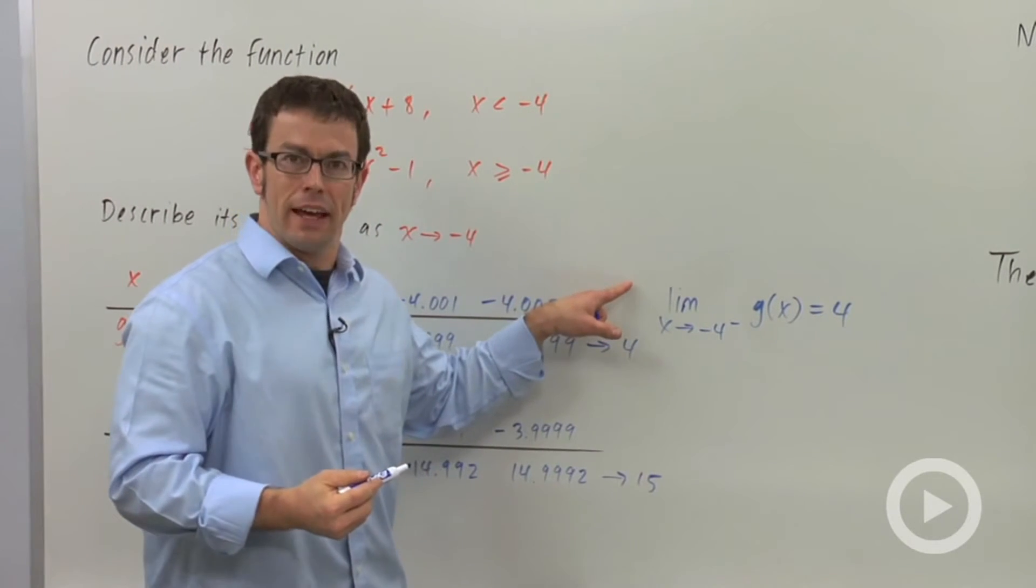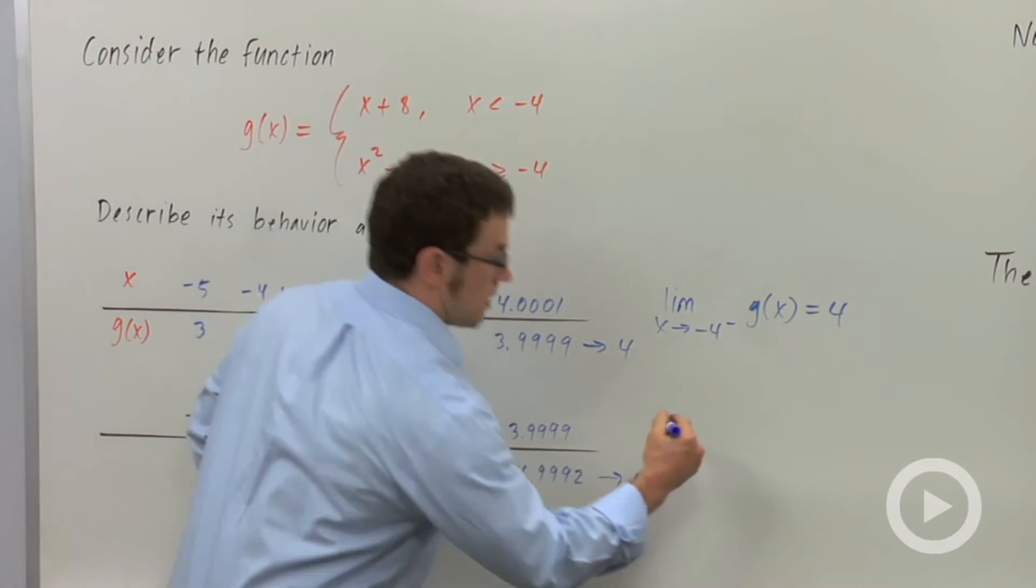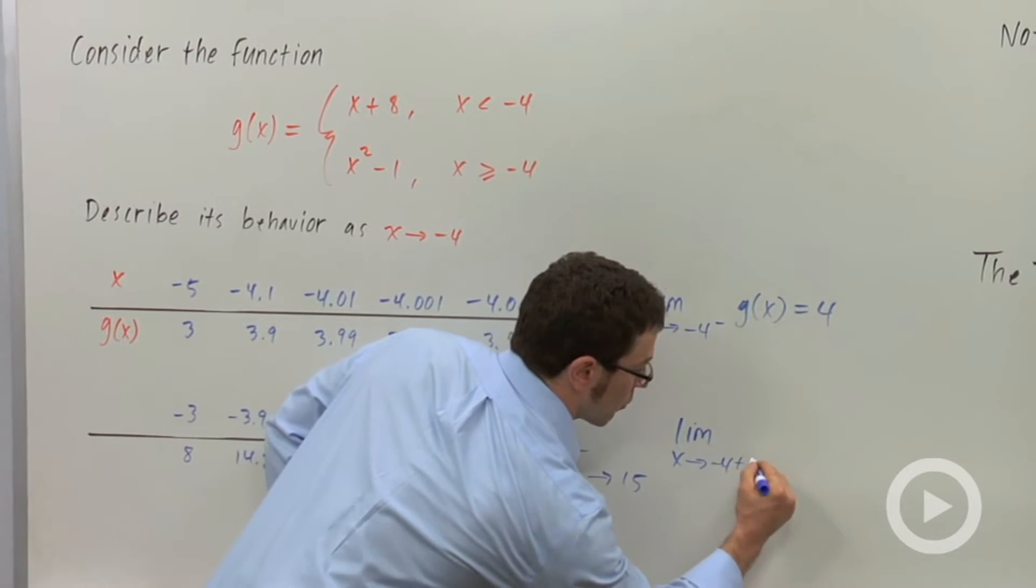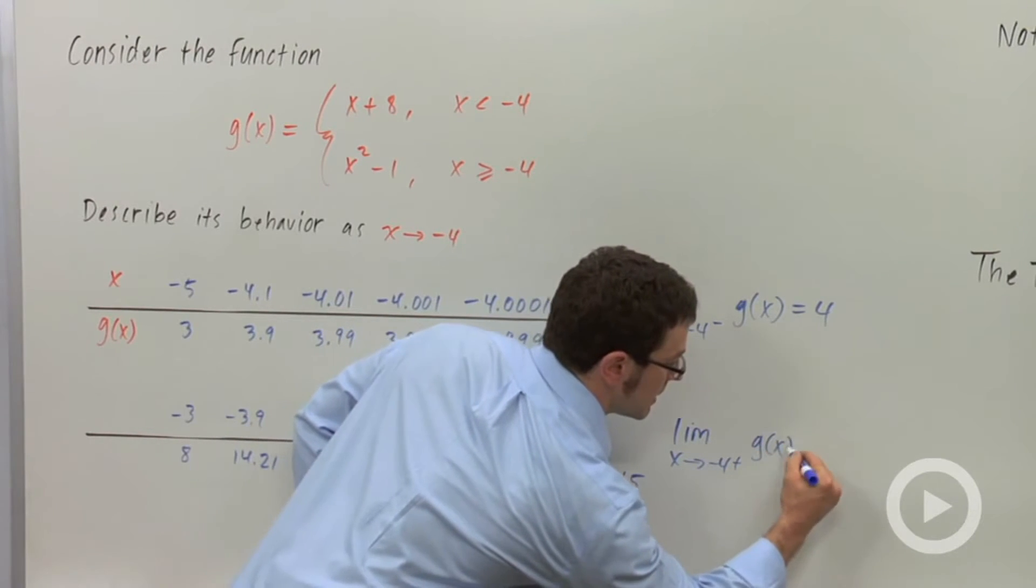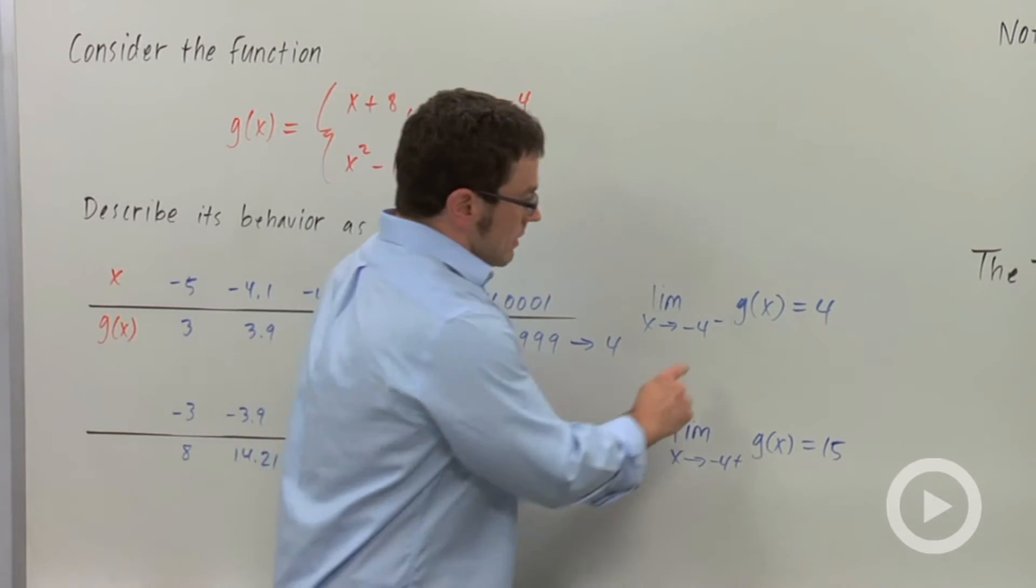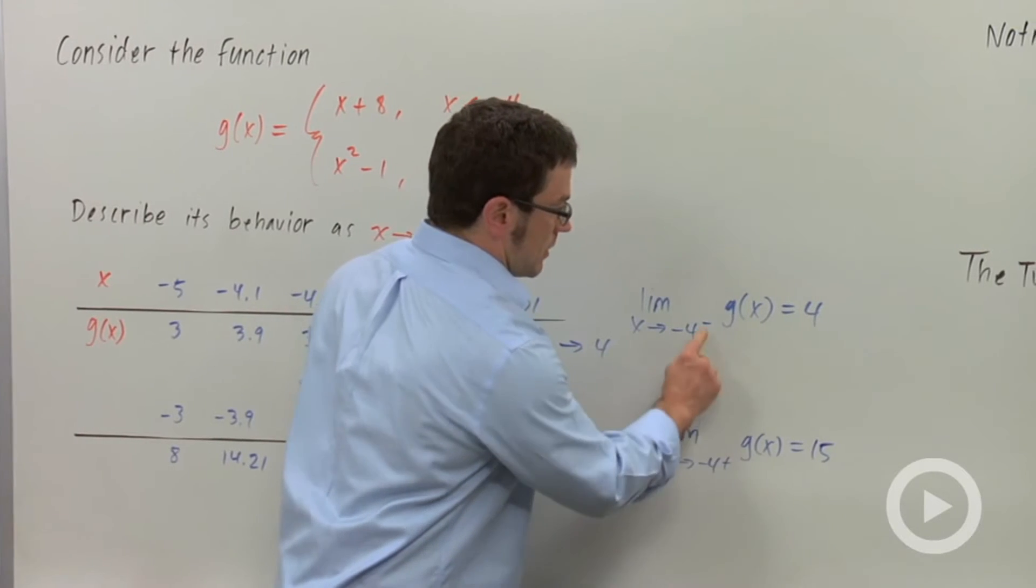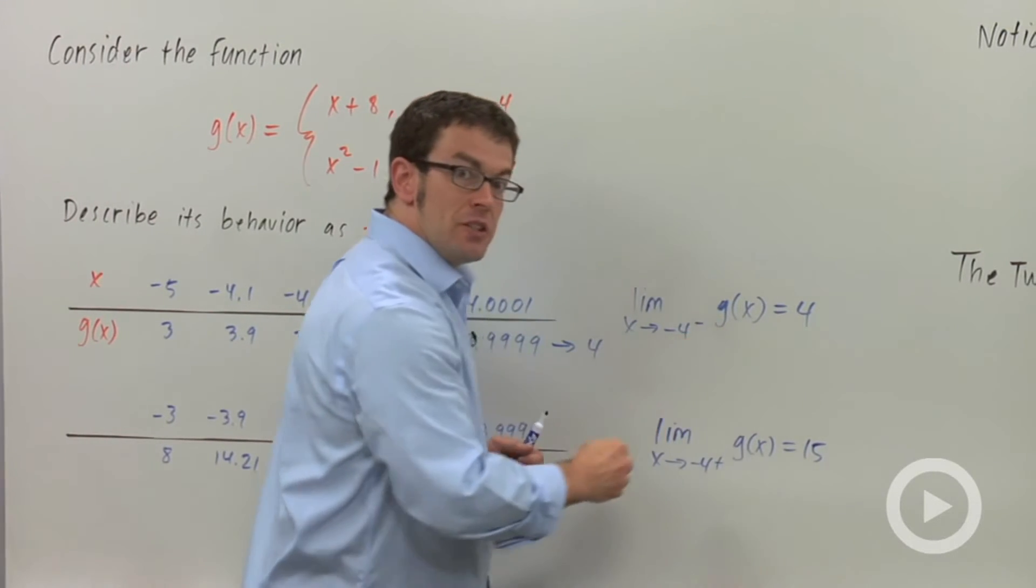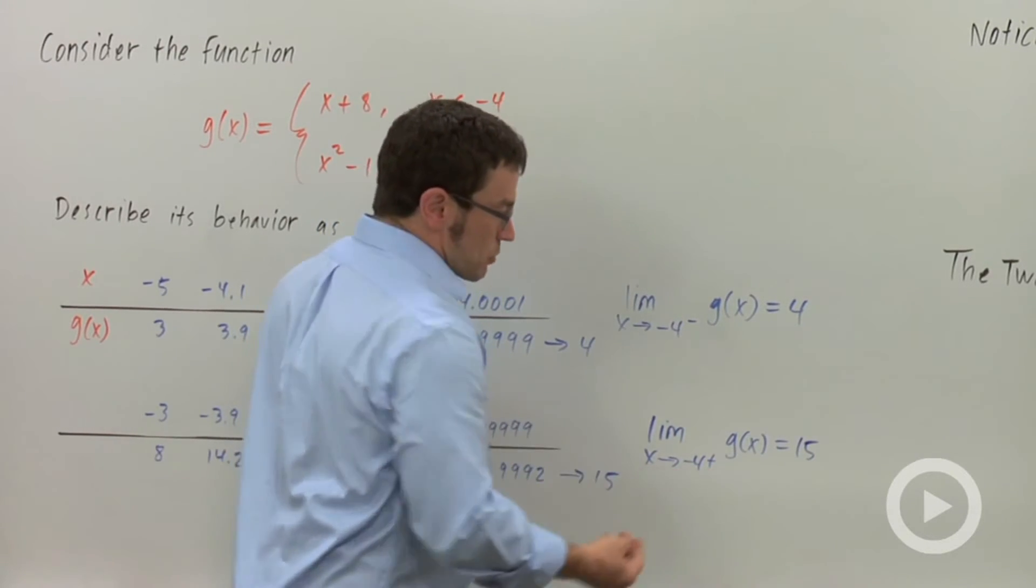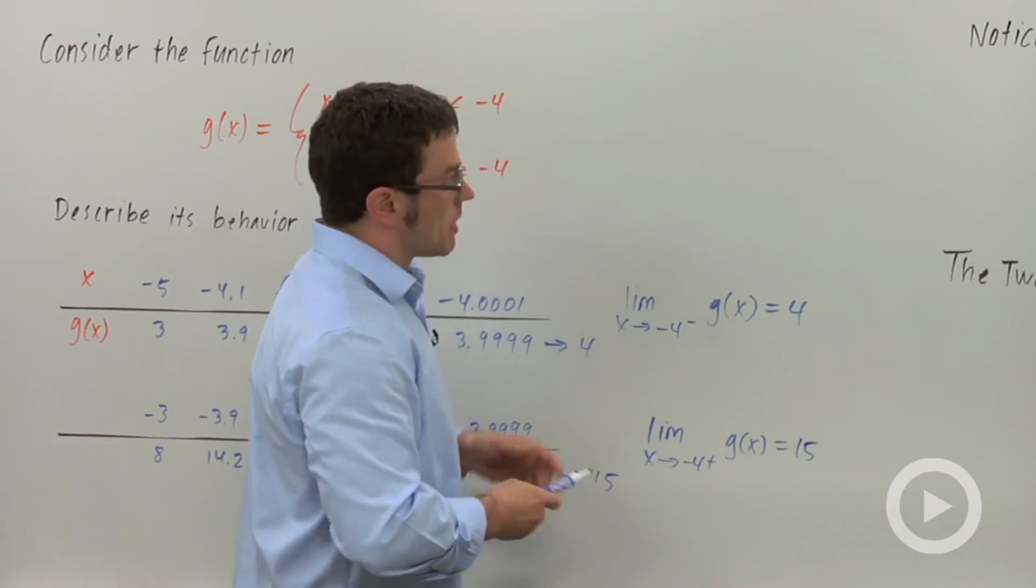This is the left-hand limit. The left-hand limit is one of the one-sided limits for g of x at negative 4. And then we say limit as x approaches negative 4 from the right of g of x is 15. This is the right-hand limit. This little superscript tells you which it is, whether it's the left-hand or the right-hand limit. The superscript negative means you're approaching negative 4 from the left, from the more negative direction. And the superscript plus means you're approaching negative 4 from the right, from the more positive direction.